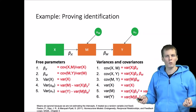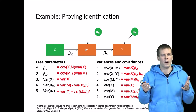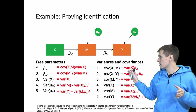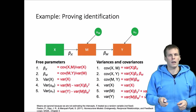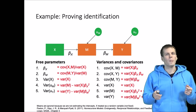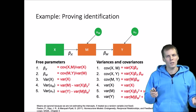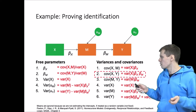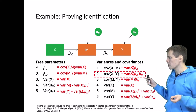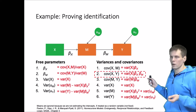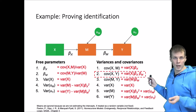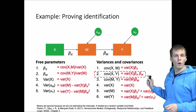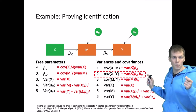So we were able to solve all these parameters from the variances and covariances. We also noticed that there is one covariance that we did not use, which gives us one degree of freedom — one excess unit of information, one covariance that was not required for estimating the model.